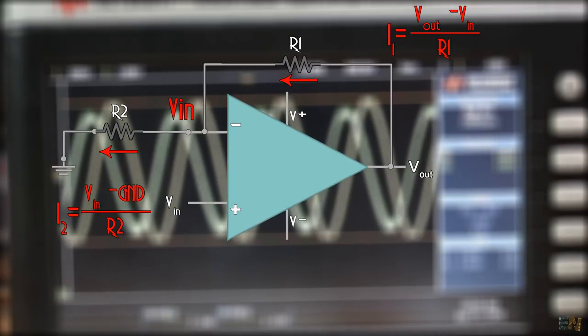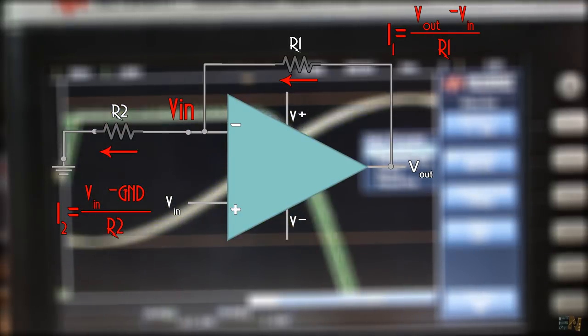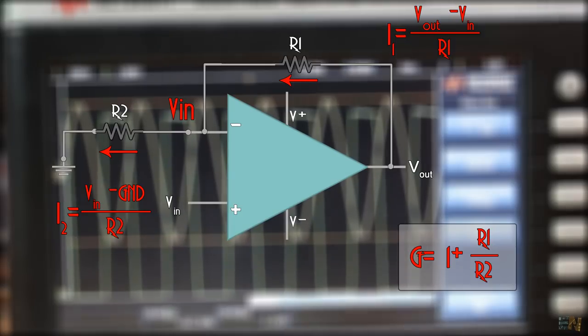But we know once again that these two currents are equal. So, solving these two equations, we get that the gain of this configuration is 1 plus R1 divided by R2.